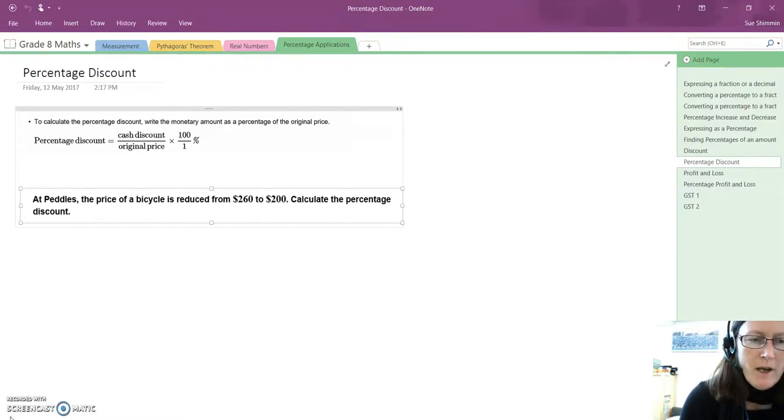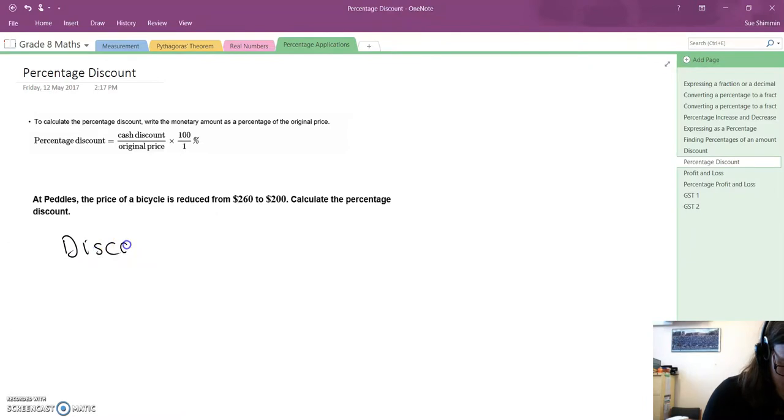Let me explain this by way of an example. At Pedals, the price of a bike is reduced from $260 to $200. Calculate the percentage discount. Well, first of all we're going to work out how much discount was received.